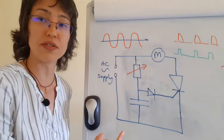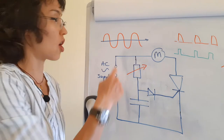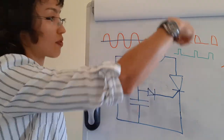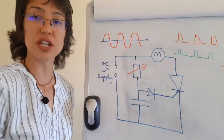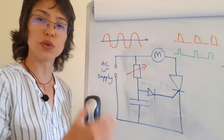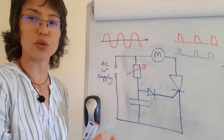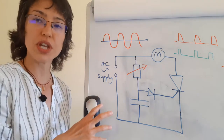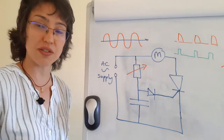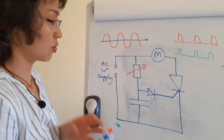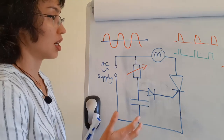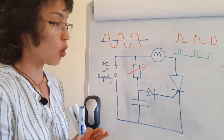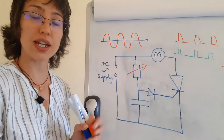Because a thyristor is a one-way device, you can only ever get a maximum of a half wave through this. So the maximum power would always only be half of what you would have if you had a full AC supply. So in order to get 100% phase control, we can build a rectifier circuit into this, or we can use something called a triac.